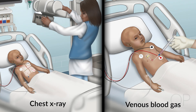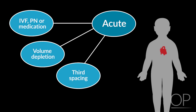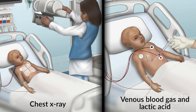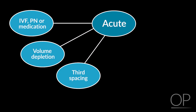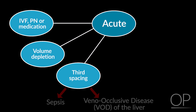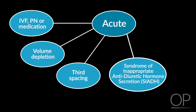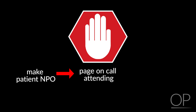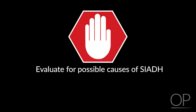Obtain a chest x-ray and VBG to assess the patient's respiratory status. If the heart rate is increased or heart sounds are distant or the pulse is weak, worry about a pericardial effusion — obtain a chest x-ray, VBG, and lactic acid to reassess cardiac status. Other causes of third spacing in transplant include sepsis or veno-occlusive disease of the liver. If the patient has evidence of SIADH — syndrome of inappropriate ADH secretion — and a reason for that to happen, make the patient NPO. Call the on-call attending and inform the ICU with a plan to have 3% sodium chloride available. Evaluate for possible causes of SIADH, which may include medications.